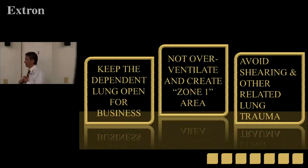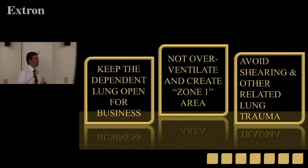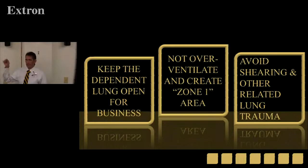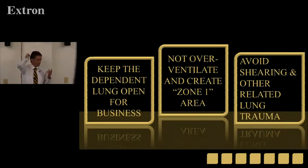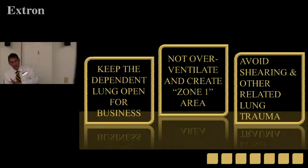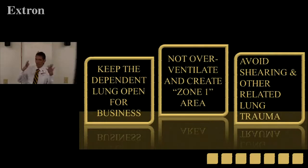The goals are: keep the dependent lung open for business — they're likely already diseased with COPD, laying lateral with abdominal viscera pushing on that lung. But don't over-ventilate — don't cause volutrauma, don't cause excessive pressure that makes Zone 1 and obstructs flow. And don't go back and forth: the shearing force of having alveoli close and open repeatedly is harmful too. These three goals are all a little bit in opposition to each other.